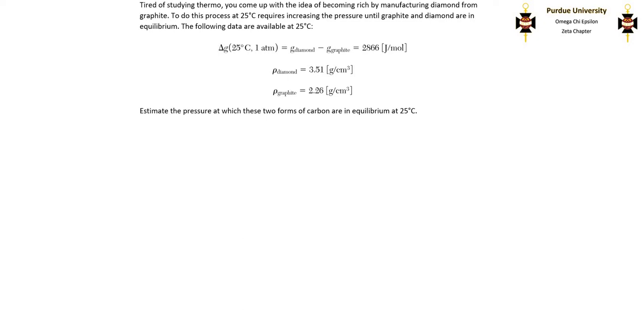I'm going to go through this example problem where we use a hypothetical process to find the equilibrium pressure between two species. The problem statement says: tired of studying thermo, you come up with the idea of becoming rich by manufacturing diamond from graphite. This process at 25 degrees Celsius requires increasing the pressure until graphite and diamond are in equilibrium.